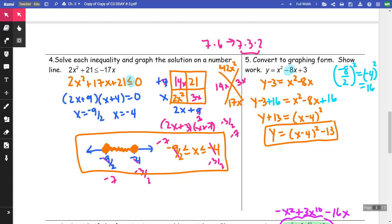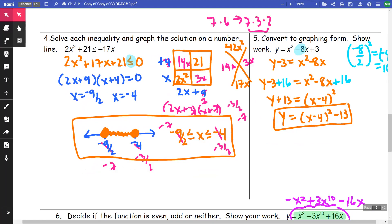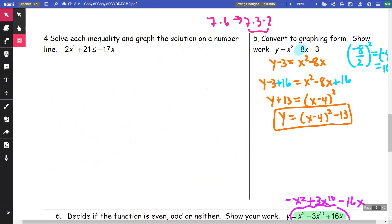So this video is a correction on chapter 3, D-Day number 3, problem number 4. I made a mistake with my diamond originally. I was thinking 72 instead of 42, so I'm going to just restart this problem so that we have the right answers here.